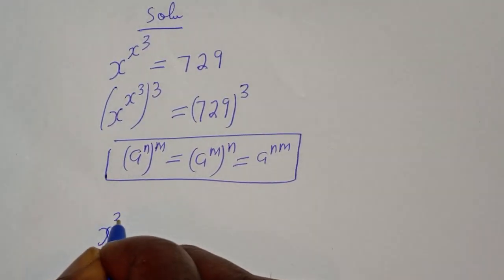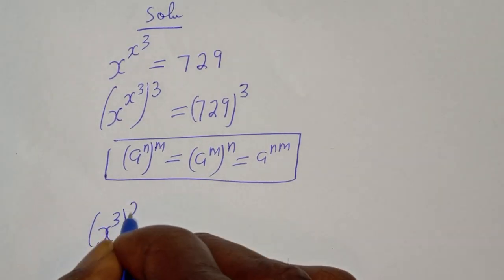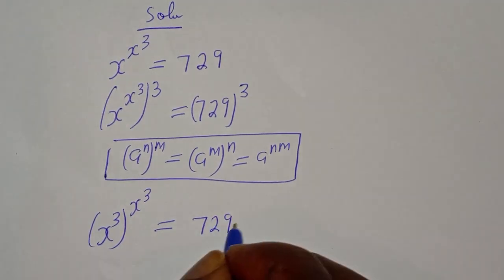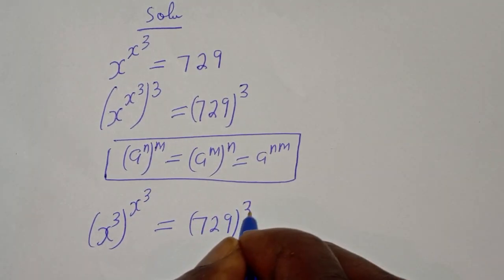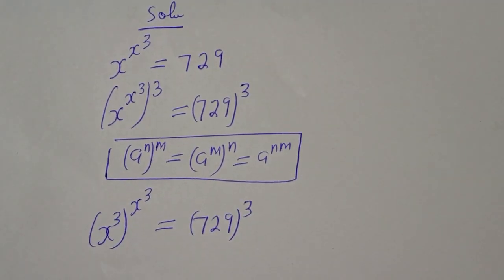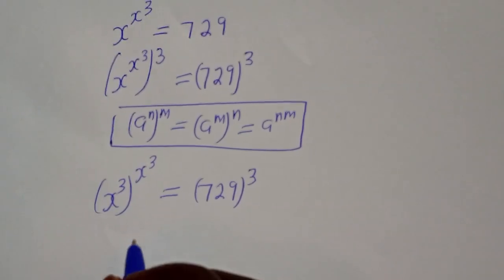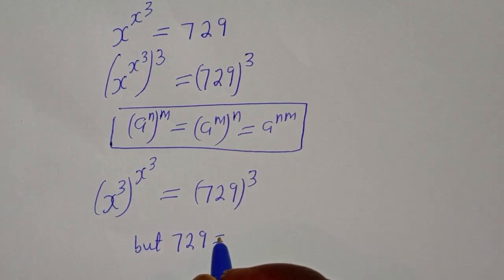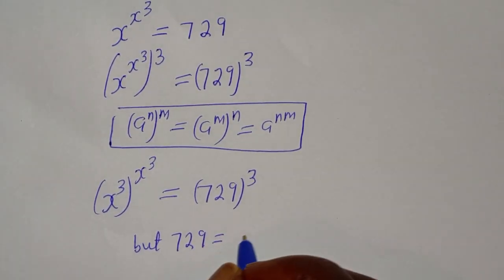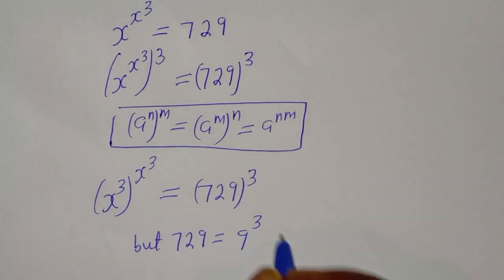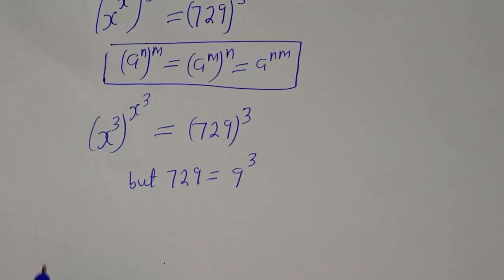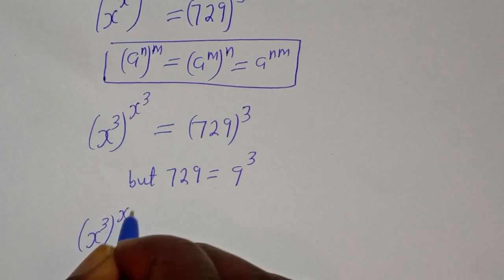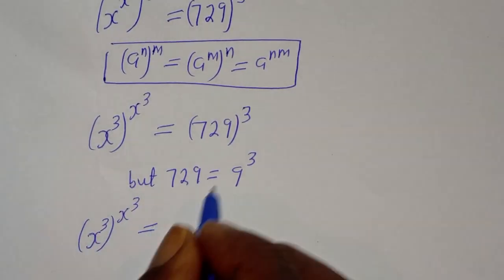Applying this rule, the left side becomes s raised to power 3 to the power of s raised to power 3, and the right side is 729 to the power of 3.